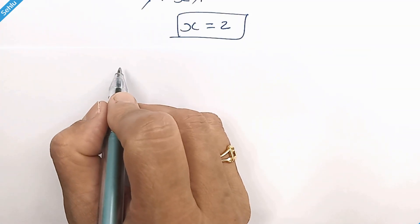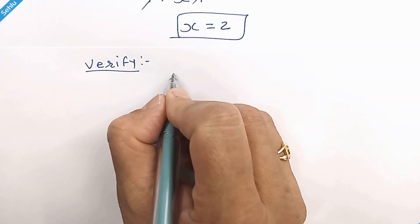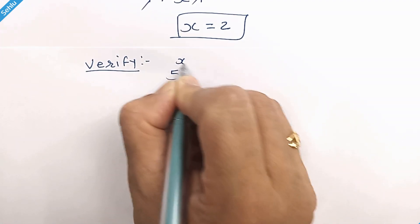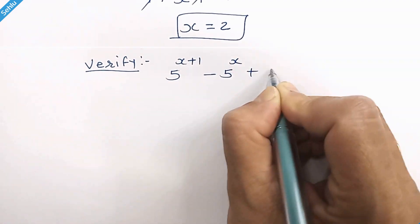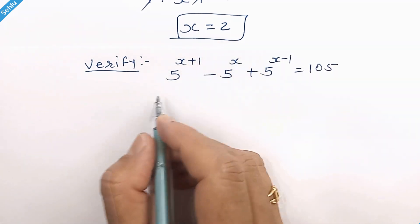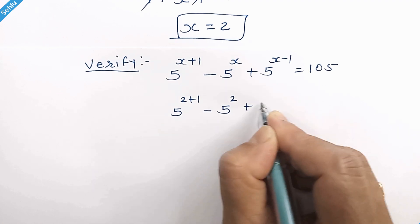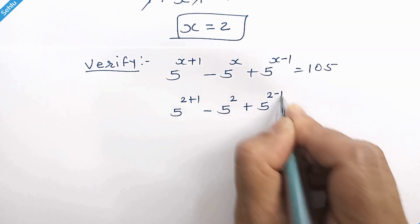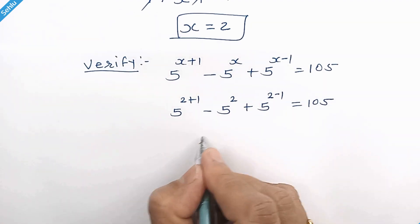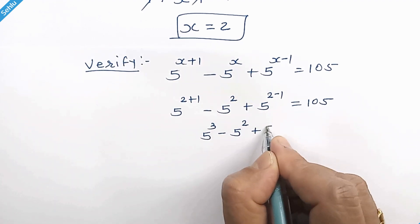Now let's verify our answer. Putting x equals 2, we have 5 cubed minus 5 squared plus 5.